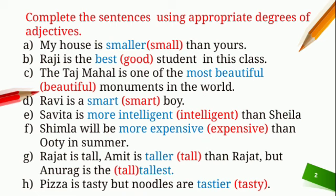Next sentence: Ravi is dash smart boy. Here, you have to describe Ravi, and we use positive degree. So our answer is: Ravi is a smart boy.